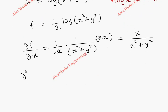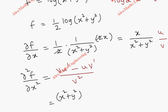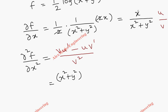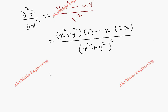Now we have to find the second derivative with respect to x. Let's follow the quotient rule u/v. The formula is (v·u' − u·v') / v². Here u = x and v = x²+y², so u' = 1. Writing out: v as it is, which is x²+y², times u' which is 1, minus u which is x, times v' which is 2x, all divided by v² = (x²+y²)².